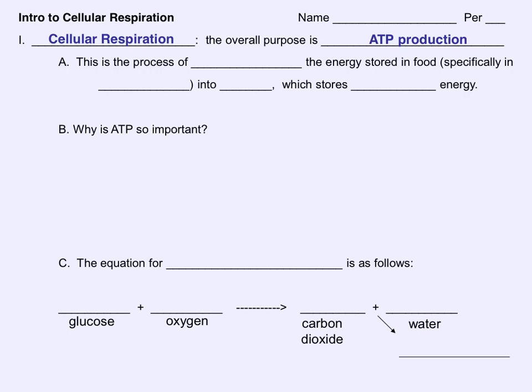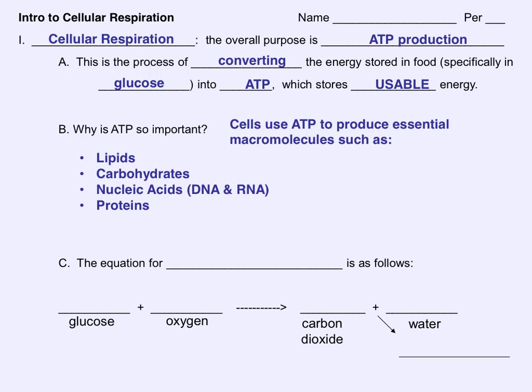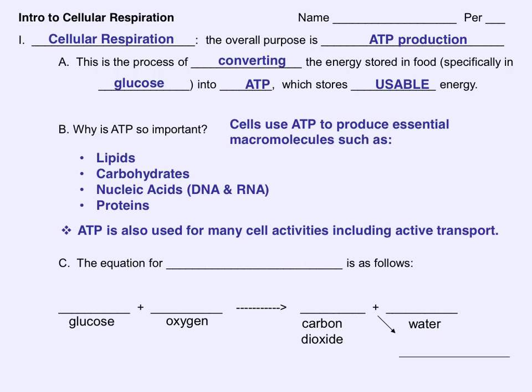Cellular respiration and the overall purpose is ATP production. Respiration is the process of converting the energy stored in food — specifically in glucose — into ATP, and that ATP stores usable energy for cellular activities. Cells use ATP to produce essential macromolecules such as lipids, carbohydrates, nucleic acids such as DNA and RNA, and proteins. ATP is also used for many cell activities, including active transport.